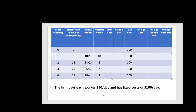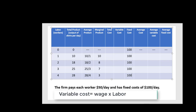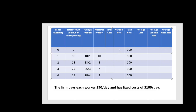Now let's calculate the variable cost. The variable cost is simply going to be the wage times the number of workers used. When we're not using any workers, 0 times 50 is just 0. When we're using one worker, we have $50 of variable cost — labor is our variable input. 2 times 50 is 100. 3 times 50 is 150, so with 3 workers and 25 units of output, our total variable cost is $150. And finally, 4 times 50 gives us 200.